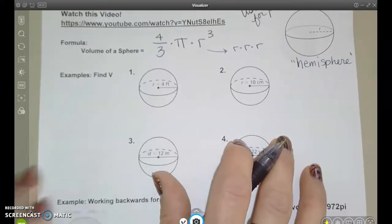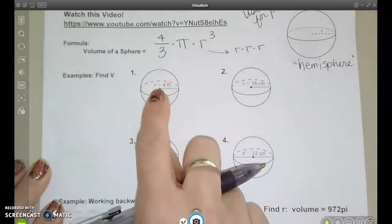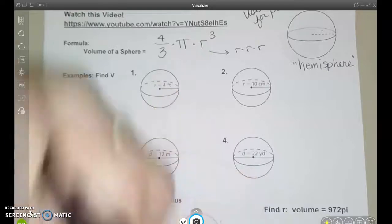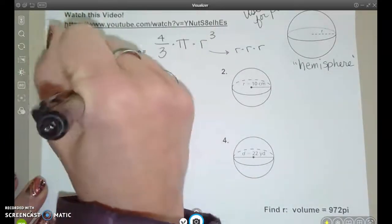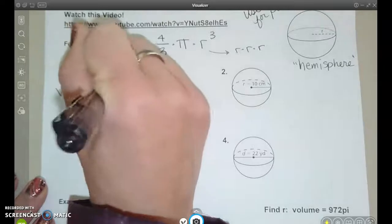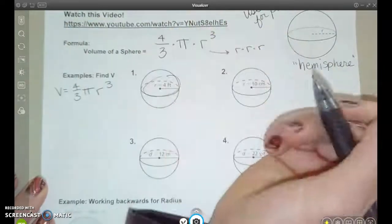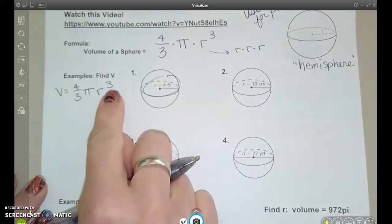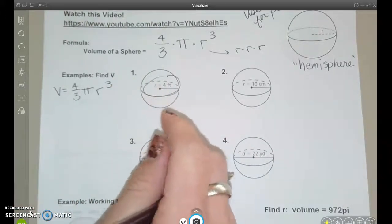Our first example is find the volume of the sphere. They're giving me the radius here, so I'm going to write down my formula, four-thirds pi r cubed, and I know I'm going to be typing in four for the radius. Once I've got my formula down, I'm really ready to just pick up my calculator.